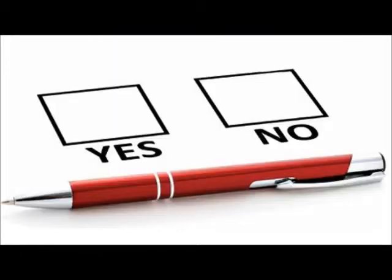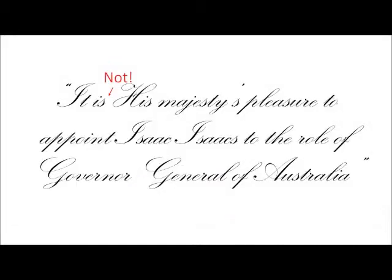In the end, Scullin threatened to hold a referendum on the matter, and King George was forced to back down, although not gracefully. When announcing a Governor-General, the traditional wording had been His Majesty's Pleasure. Suffice it to say, those words did not appear in the announcement for Isaacs.